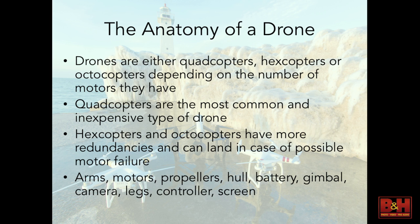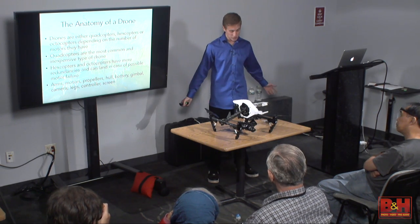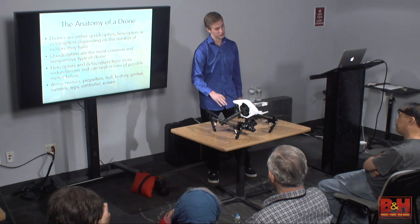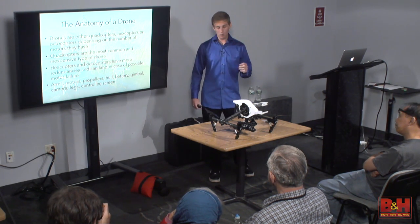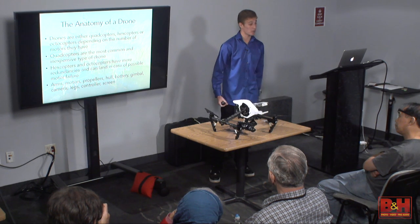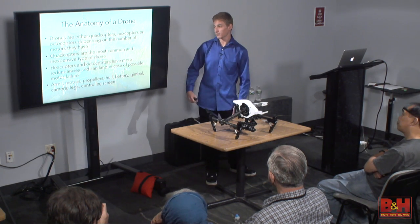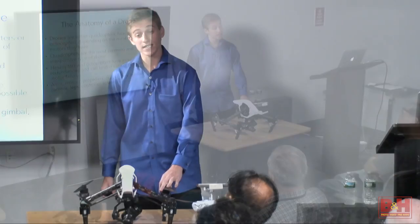Quadcopters are the most common and inexpensive type of drones. That's what you'll see on most of the market — all the Phantoms, most DJI products. Although I wouldn't consider this particular drone inexpensive; it's about $5,000. So why do hexacopters and octocopters exist if a quadcopter is cheaper? Hexacopters and octocopters — six and eight motors — have redundancy. If one motor were to fail in the air, your drone won't crash to the ground; the other motors will compensate and allow you to safely land.